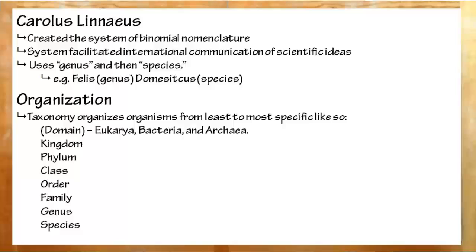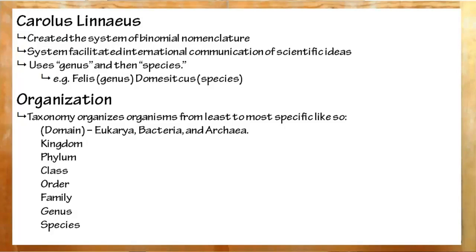To recap: taxonomy is the classification of living things. It started with Carolus Linnaeus, who invented the system of binomial nomenclature so scientists who spoke different languages could communicate about living things. The system uses first the genus and then the species in that order — such as Felis domesticus, the common house cat. The current system uses five kingdoms and gets more specific as you go down. Kingdom is the least specific, then phylum, class, order, family, genus, and species — which is the most specific.